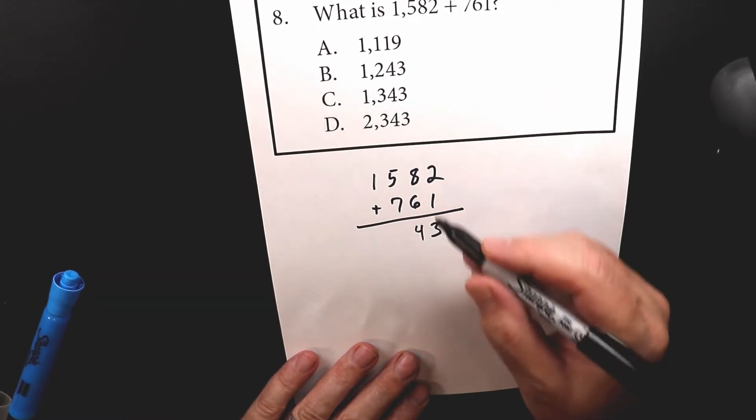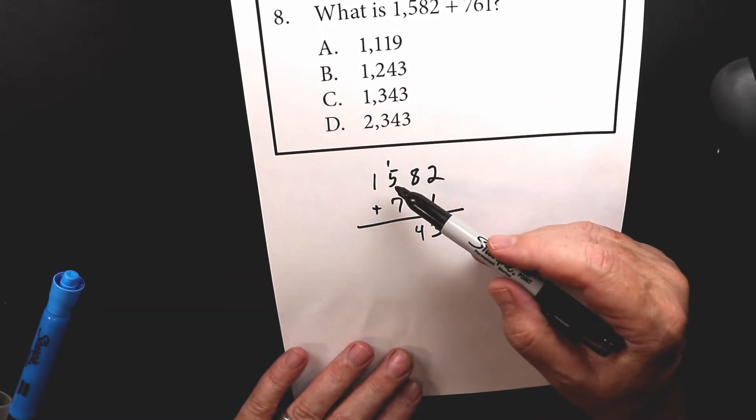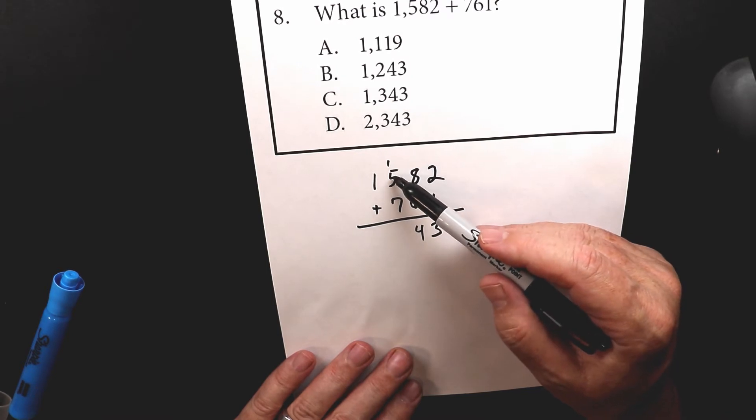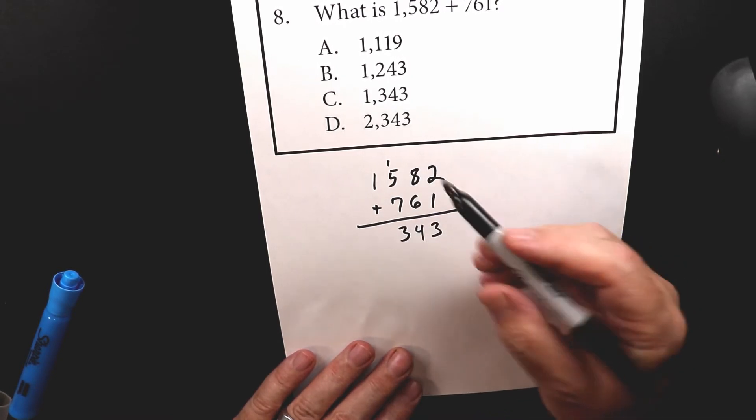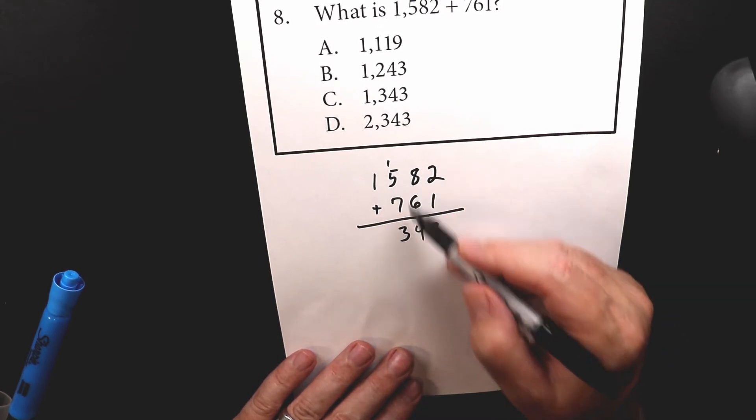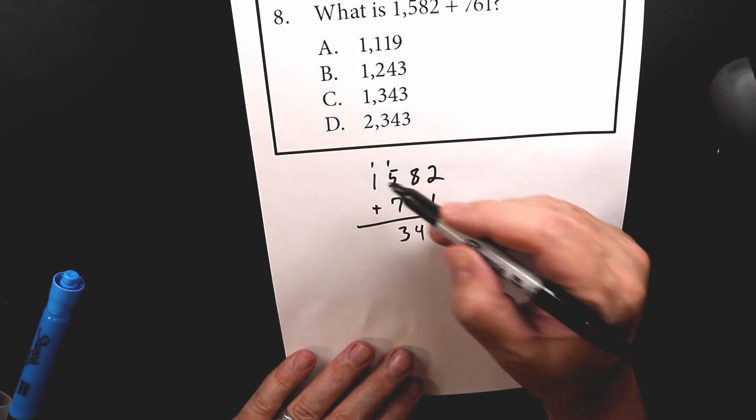So I put down the 4, I carry the 1, so we have 1 plus 5 is 6, and 6 plus 7 is 13. So again, you can use your fingers, but this time I'm going to ask you to trust me, we'll move over one more.